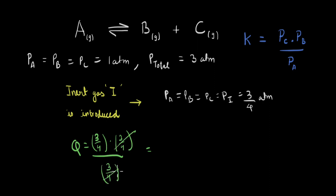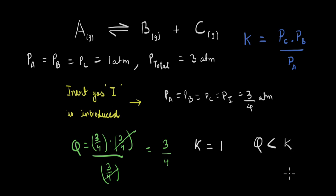Cancelling, the reaction quotient is 3/4 after the introduction of an inert gas. Just like before, if we plug in the original values of partial pressures, the equilibrium constant K is 1. So in this case, the reaction quotient is less than the equilibrium constant, which means the equilibrium will shift in the forward direction — towards the products — so we'll have more of B and C forming. We have 2 moles on the product side and only 1 mole of A on the reactant side, so the equilibrium shifts in the direction of increasing number of moles.